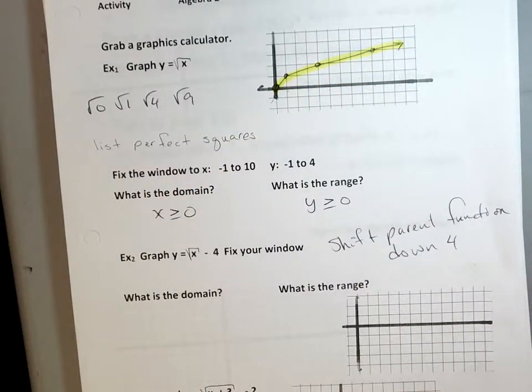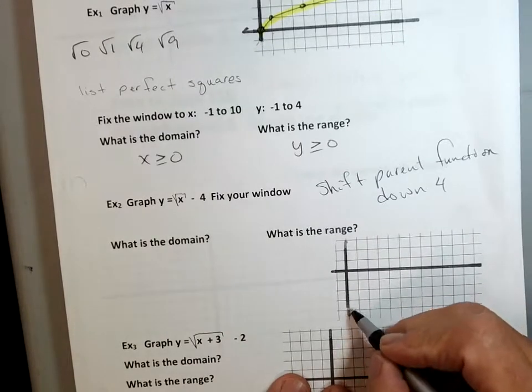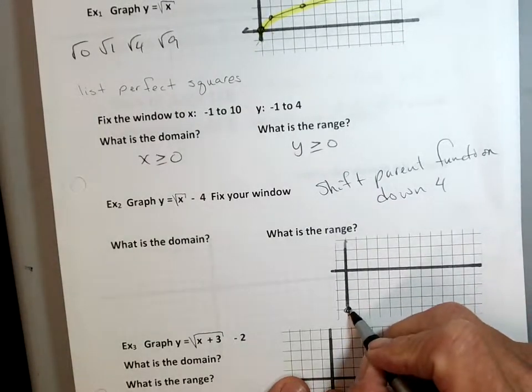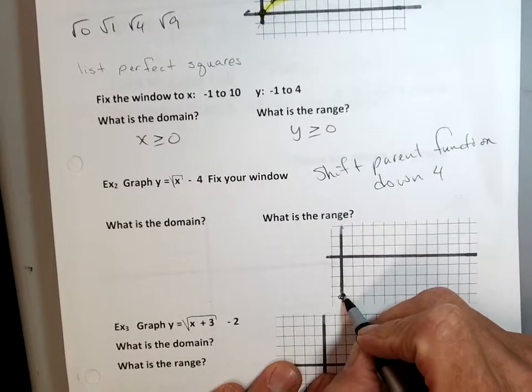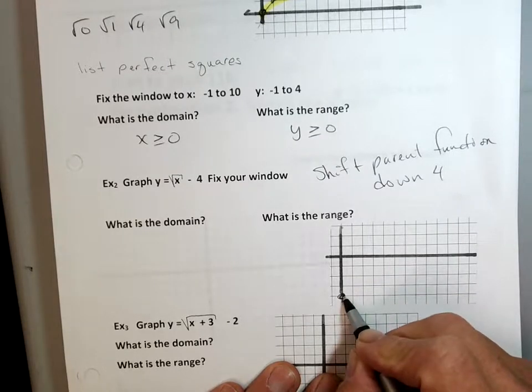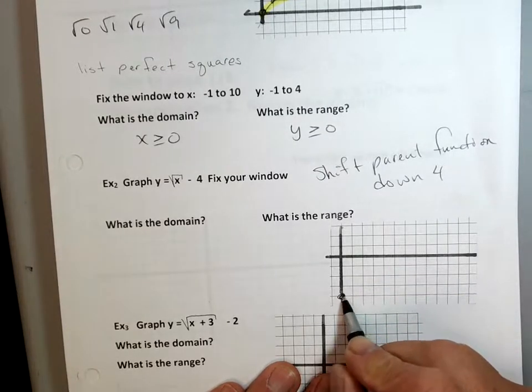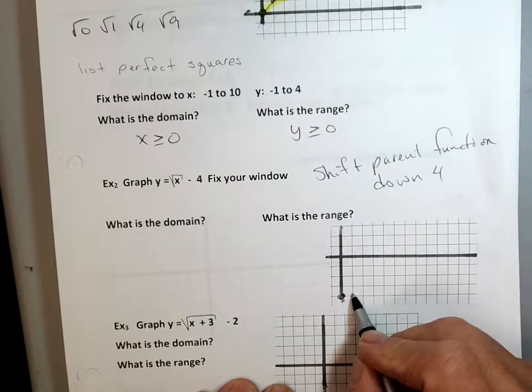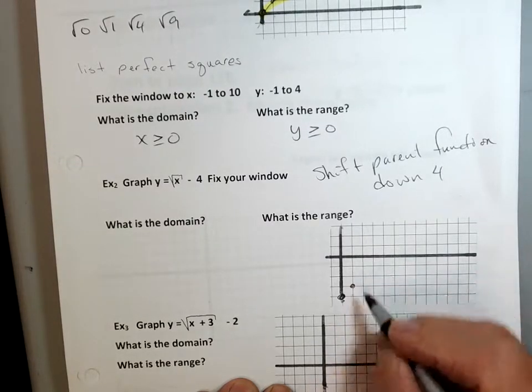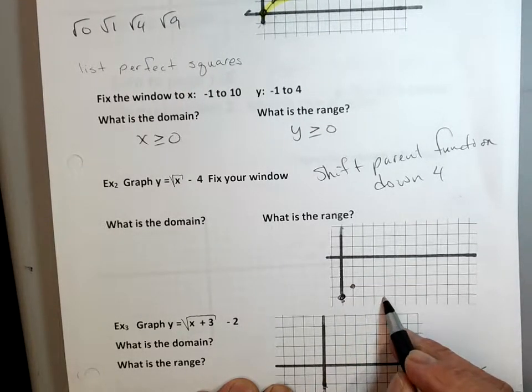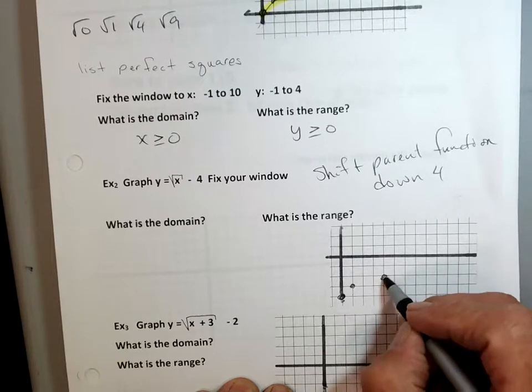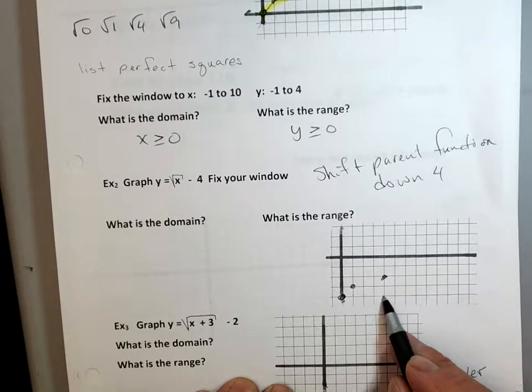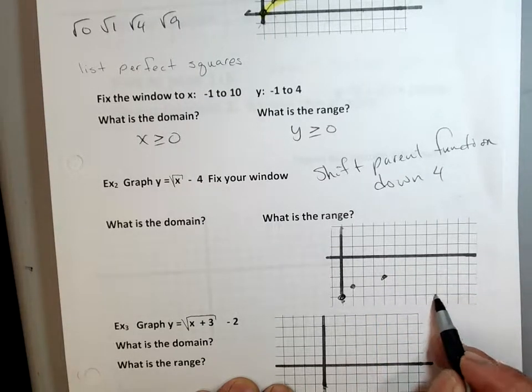So we take this graph, my parent function, we're just going to bring it down 4. It's that easy. So we take it down 4, 1, 2, 3, 4, and there's my endpoint. And we'll do the same process from here. If I go over 1, the square root of 1 is 1, right? If I go over 1, 2, 3, 4, the square root of 4 is 2. 1, 2, 3, 4, 5, 6, 7, 8, 9, square root of 9 is 3.